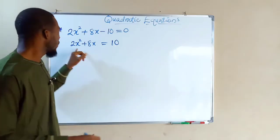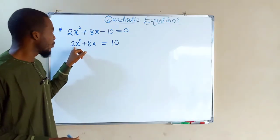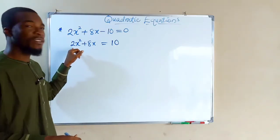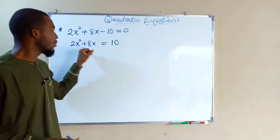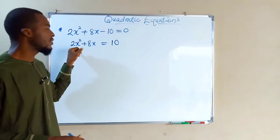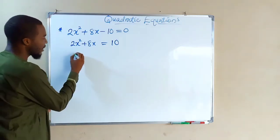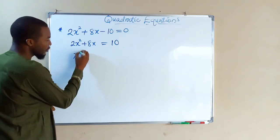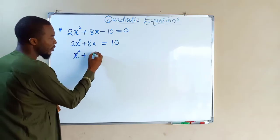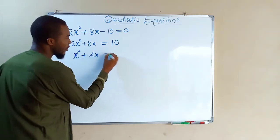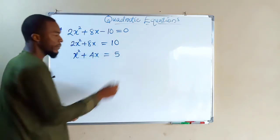Always ensure that the leading coefficient is 1, but here we have it as 2. So we are going to divide both sides by 2. The first term becomes x², the second term becomes 4x, and the constant becomes 5.